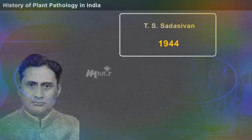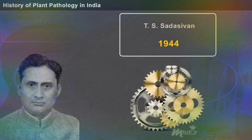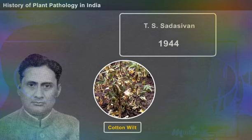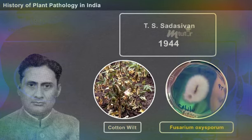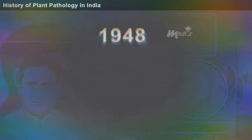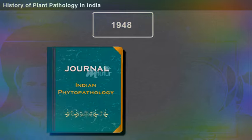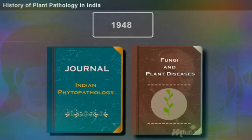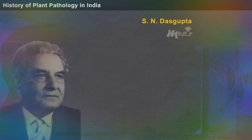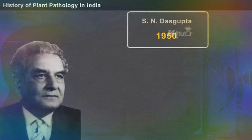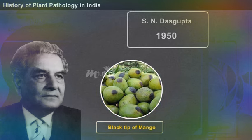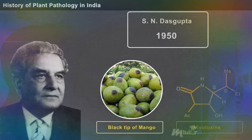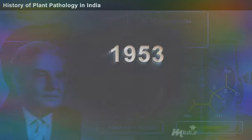T. S. Sadasivan, in 1944, studied the mechanism of wilting in cotton caused by Fusarium oxysporum. In 1948, he initiated a journal named Indian Phytopathology and authored a textbook entitled Fungi and Plant Diseases. S. N. Das Gupta, in 1950, carried out an exhaustive study on black tip of mango and derived the mechanism of vivotoxins.